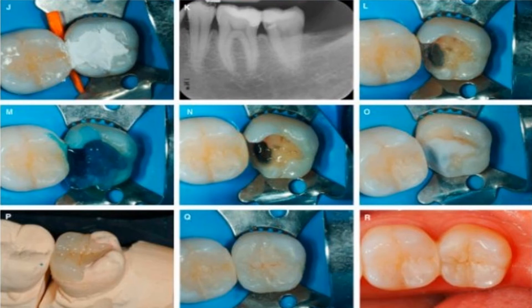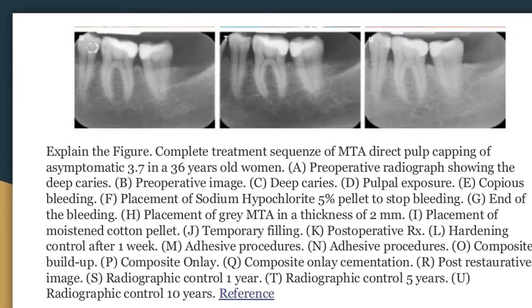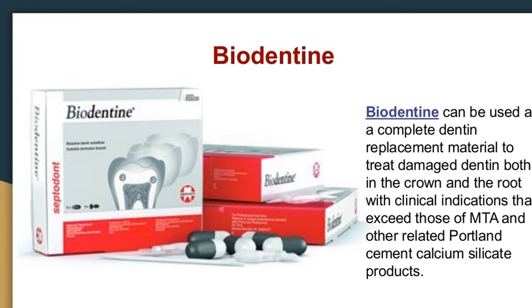Continuing the MTA treatment sequence: (i) placement of a moistened cotton pellet, (j) temporary filling, (k) postoperative radiograph, (l) hardening control after one week, (m–n) adhesive procedures, (o) composite buildup, (p–q) composite onlay and cementation, (r) post-restorative image, (s) radiographic control at one year, (t) at five years, and (u) radiographic control at ten years.